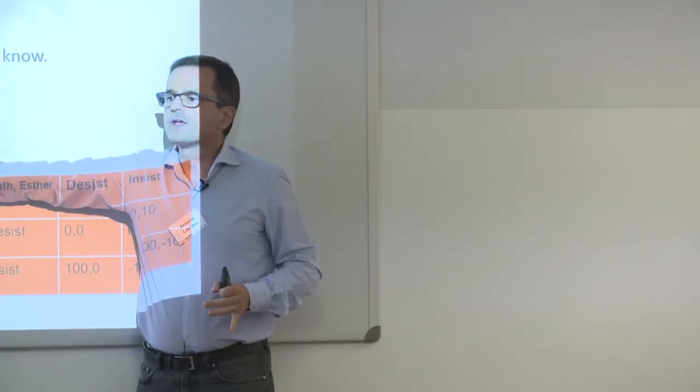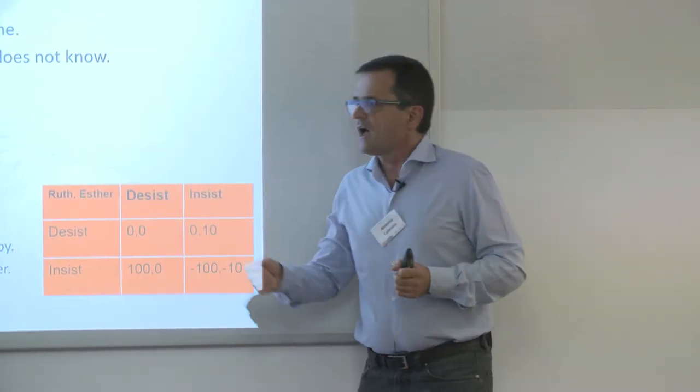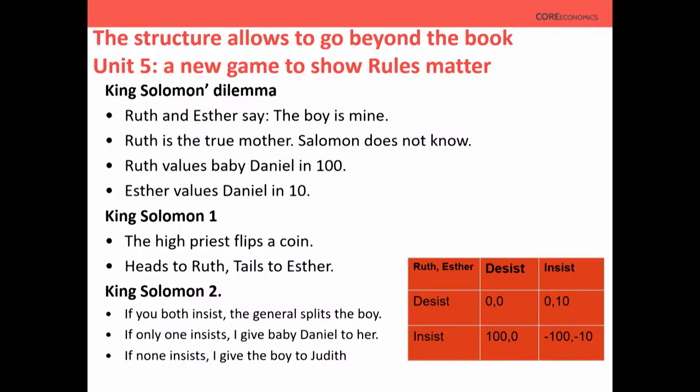The rules of the game are going to matter a lot. Rule one: the high priest flips a coin — heads goes to Ruth, tails to Esther. In terms of payoffs, that gives (100, 0) with probability one-half and (0, 10) with probability one-half. That doesn't seem very efficient; it looks improvable. But you need to be cleverer. Rule two is literally what Solomon announced: if both women insist they are the mother, the general will split the boy in half and give half to each.